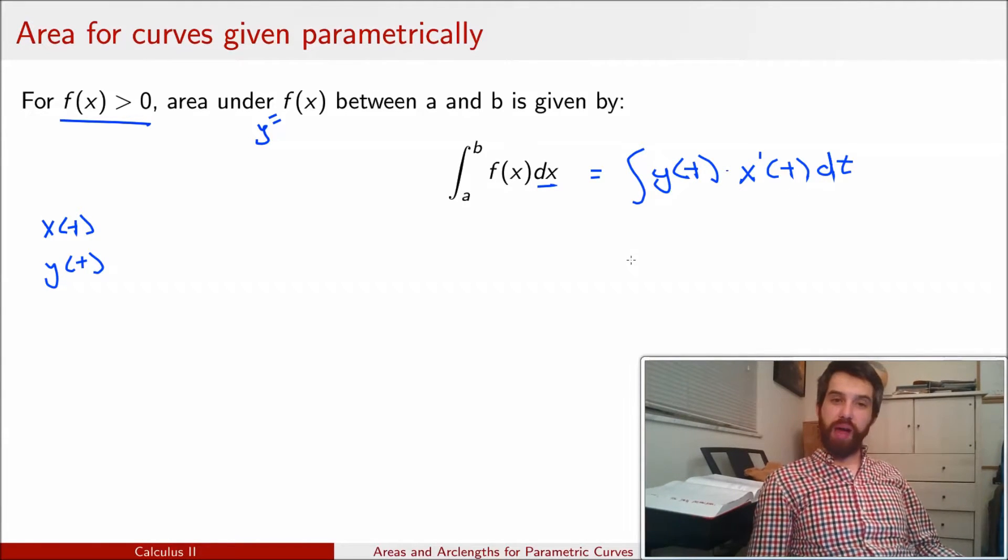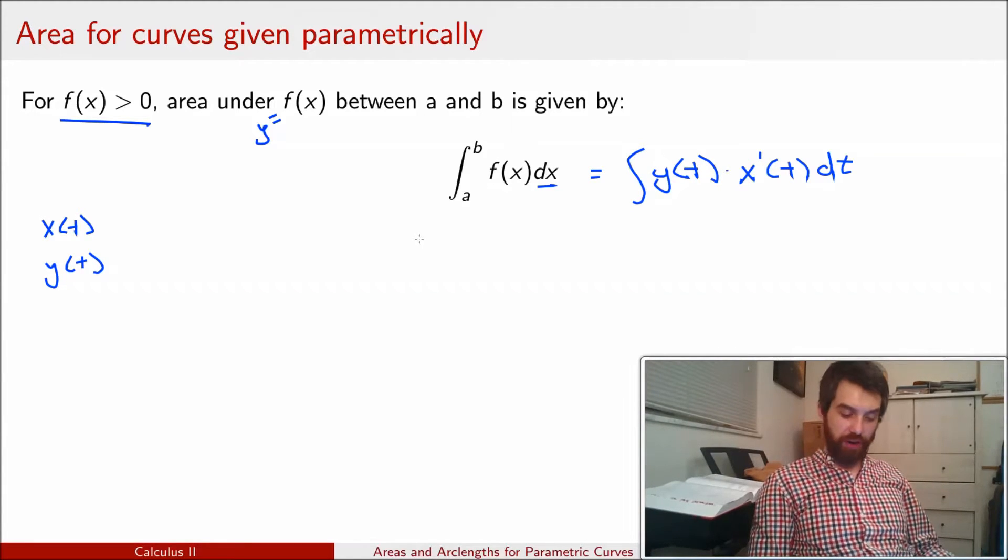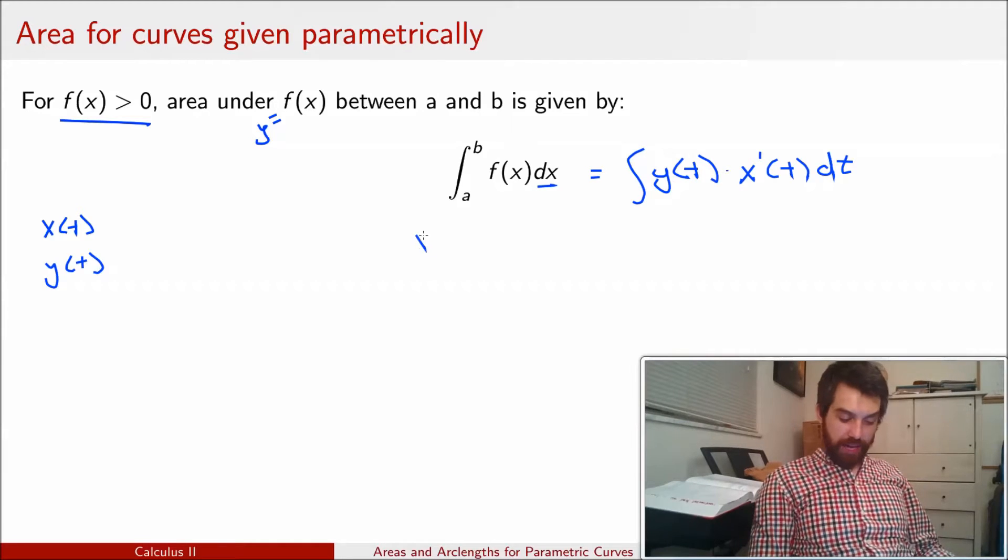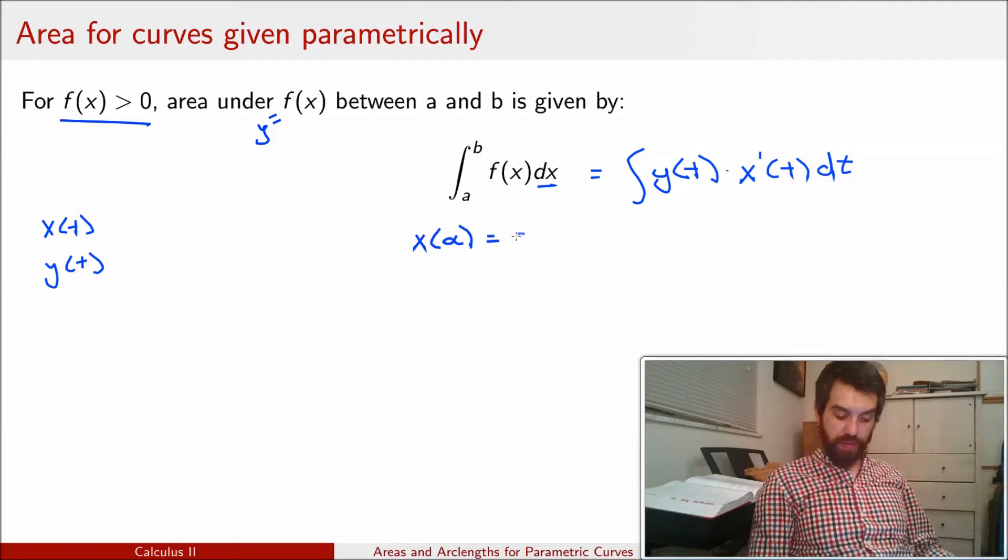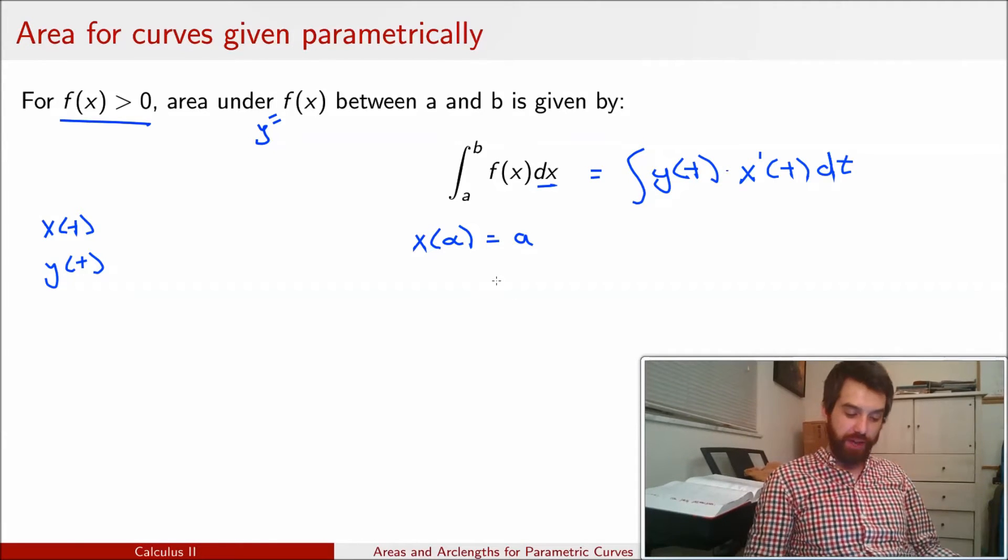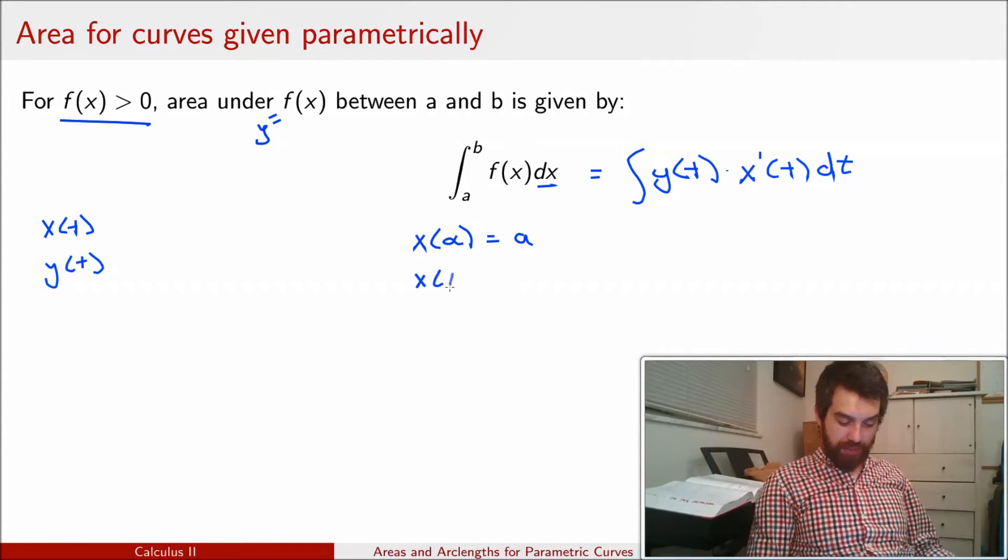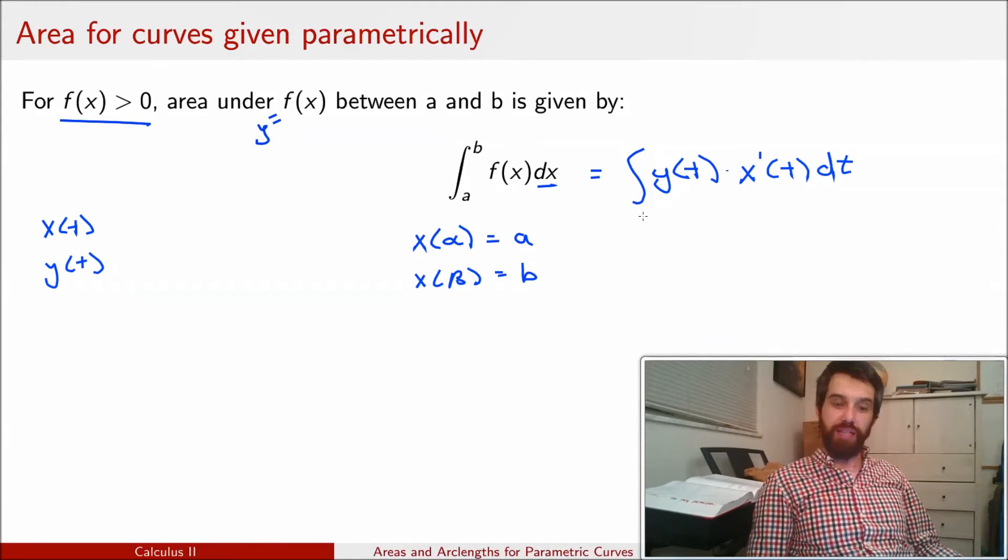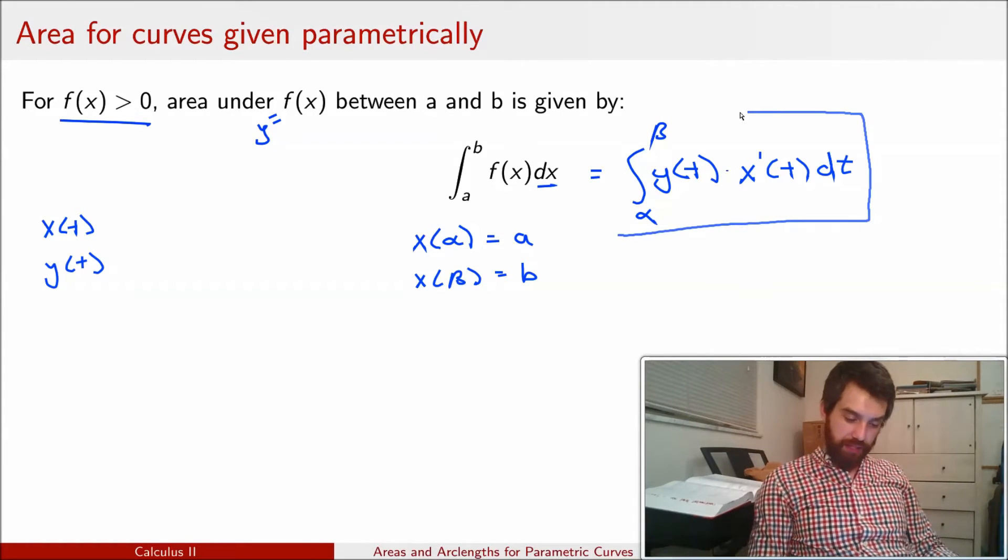Finally, I need to deal with my limits. So what I'm going to do is I'm going to imagine that I have some particular value such that x at the particular value of alpha is just going to be equal to a. So this is the t value alpha is going to give out a. And I'm going to imagine that I have a t value beta that's going to give out b. And then this integral, if I'm changing from x values to t values in my substitution rule, it's going to be the integral from alpha up to beta.